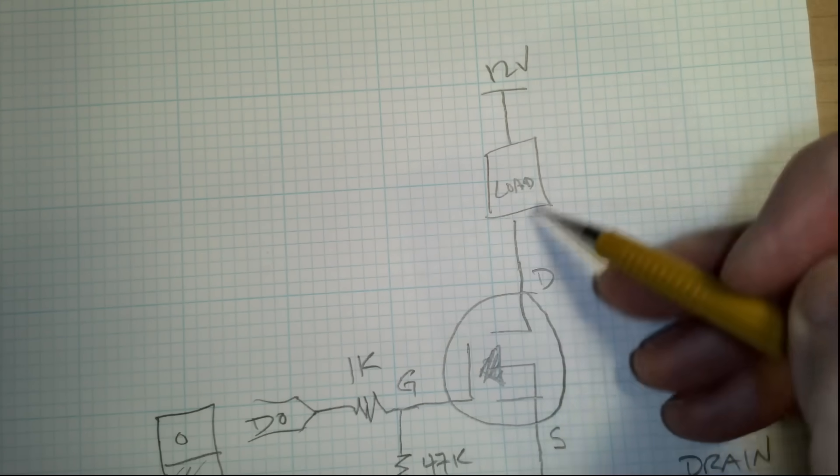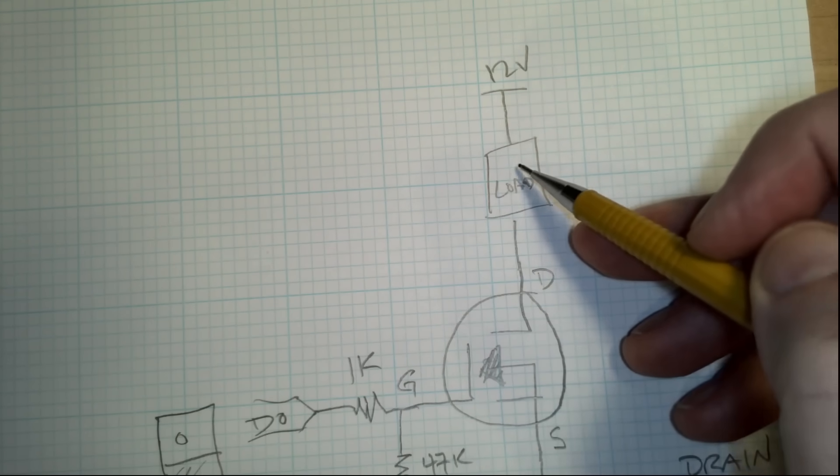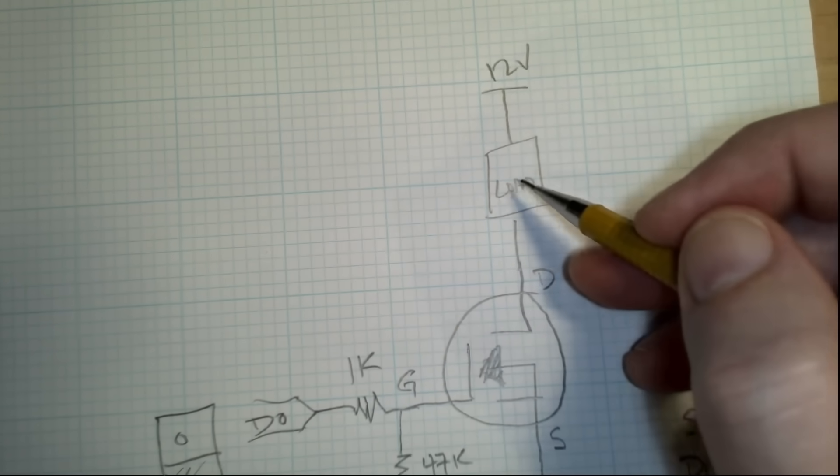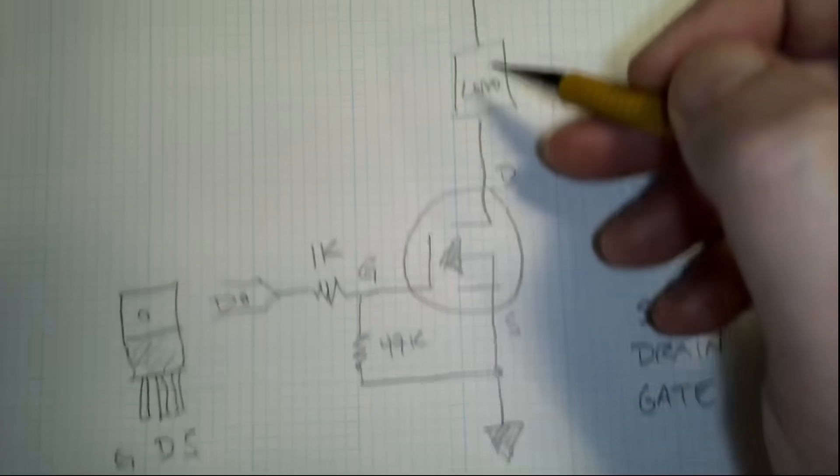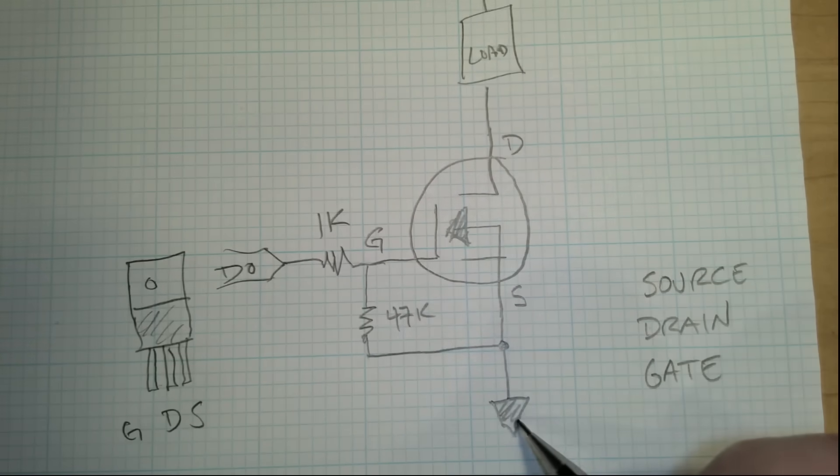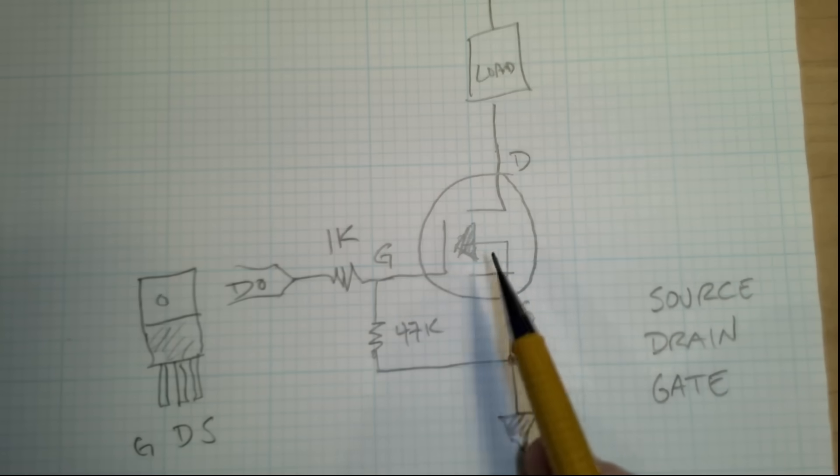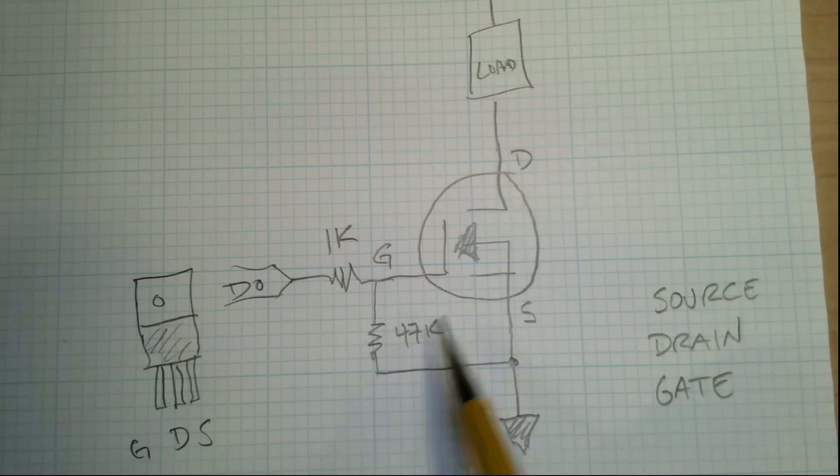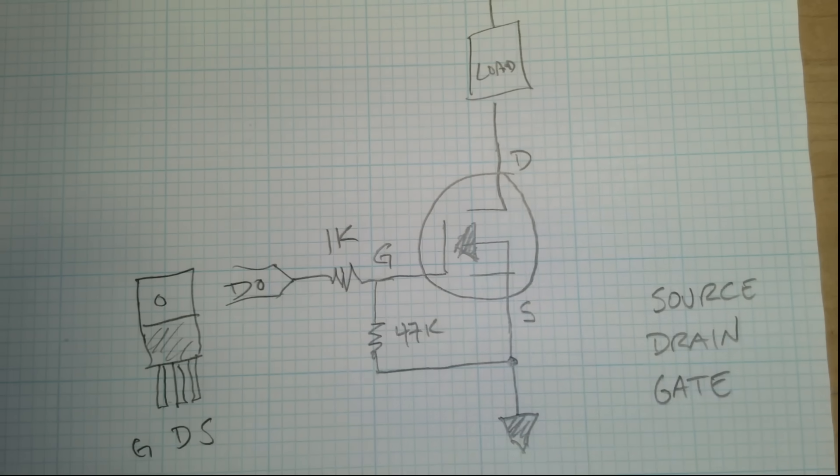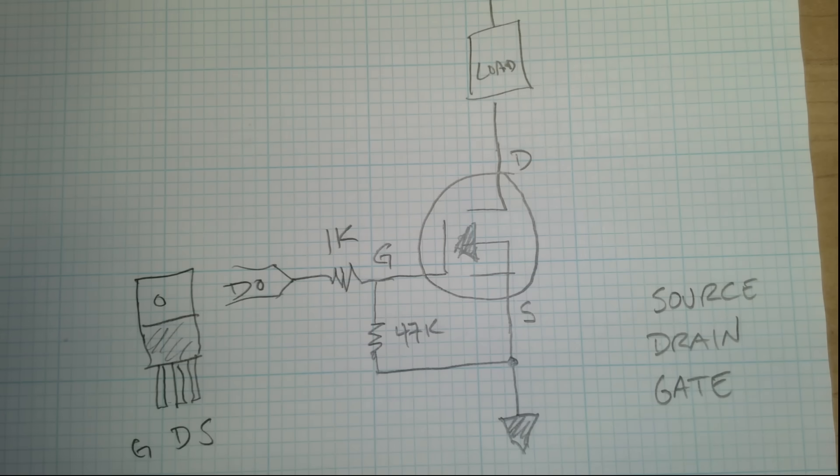So basically 12 volts goes through whatever we're trying to control, our fan, our lights, whatever. We'll do this with a fan just here on the desktop as an example, but then it goes into the drain and then out source to ground. That's all there is to it. So basically a couple of resistors and the transistor. That's all we need. Let's go wire this up on a breadboard and control something so we can see how it works.